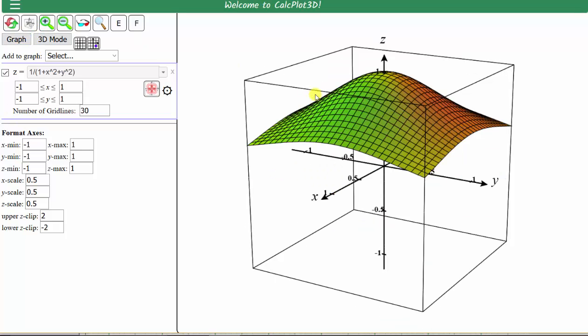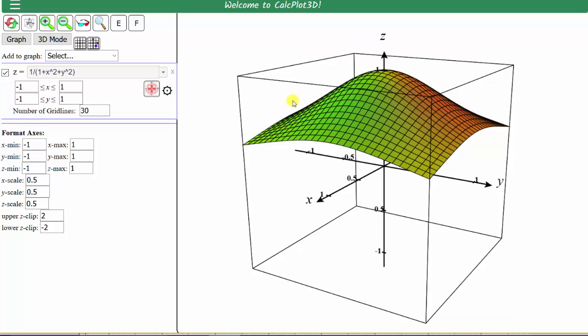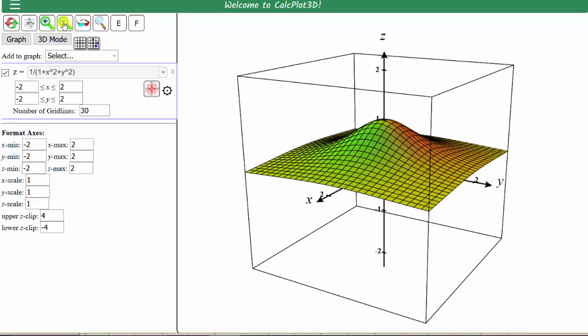Click graph. Here's the surface. Let's go ahead and zoom out. We zoom in and out using these buttons. Let's click the minus to zoom out, and now let's click draw contour plot.